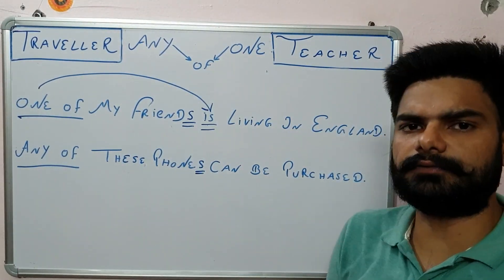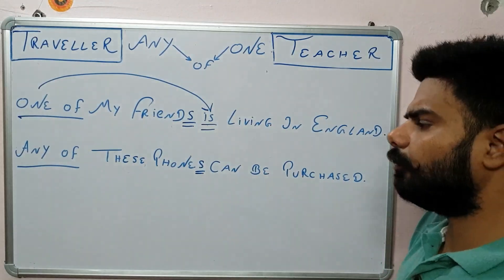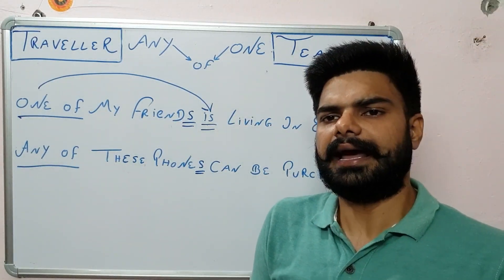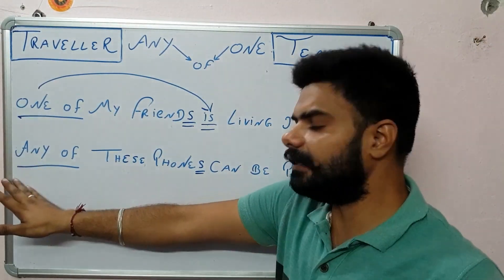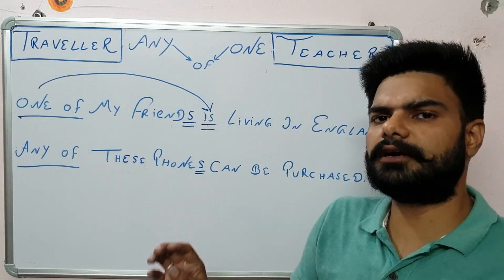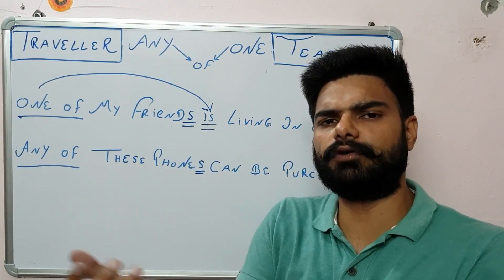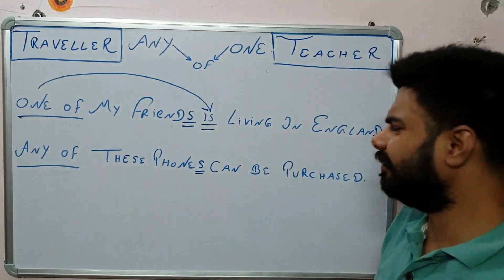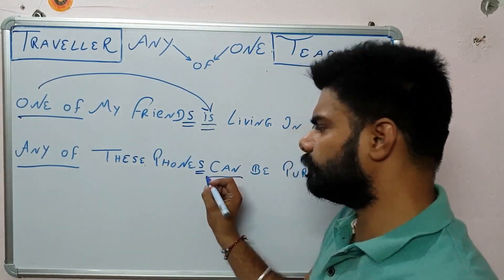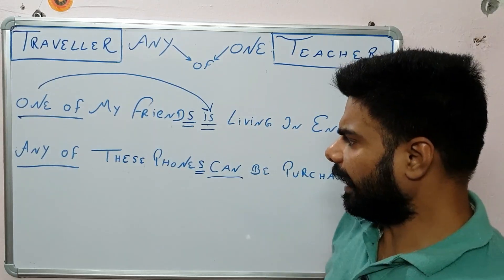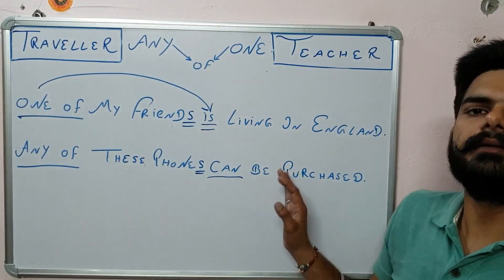So any of these phones can be purchased. You are at the mobile shop and you have shortlisted two, three phones. So now you are seeking advice from your friend and your friend is saying that, okay, any of these phones, you have selected two or three or you have shortlisted two, three, four phones. So any of these phones can, now can is the same word for even single and for plural. So any of these phones can be purchased.